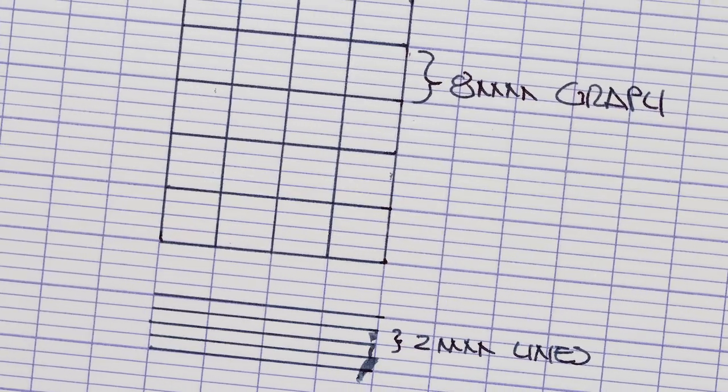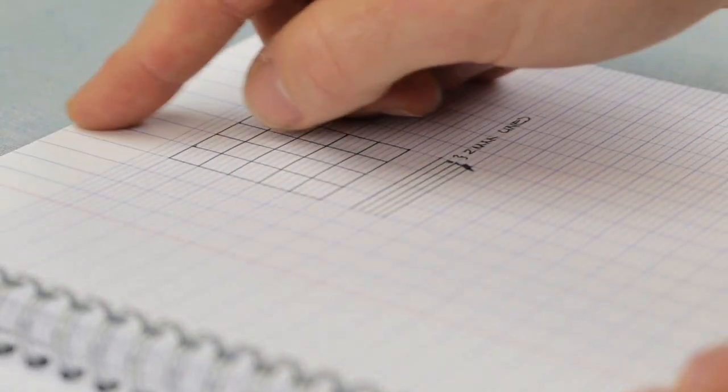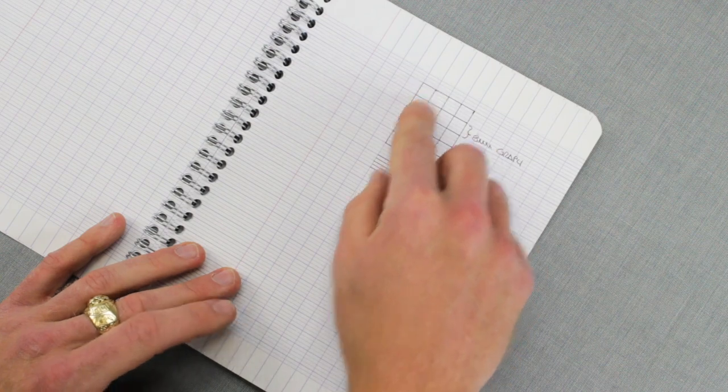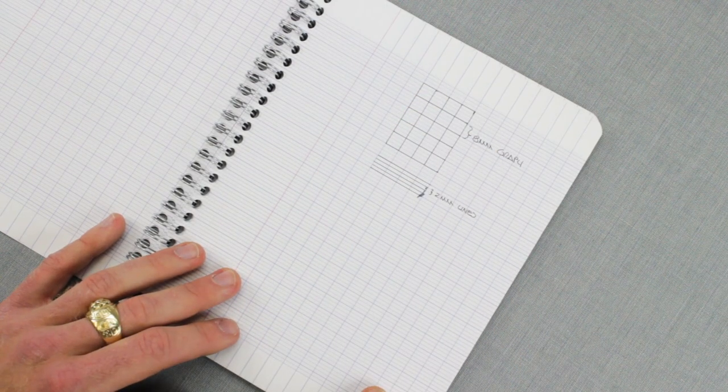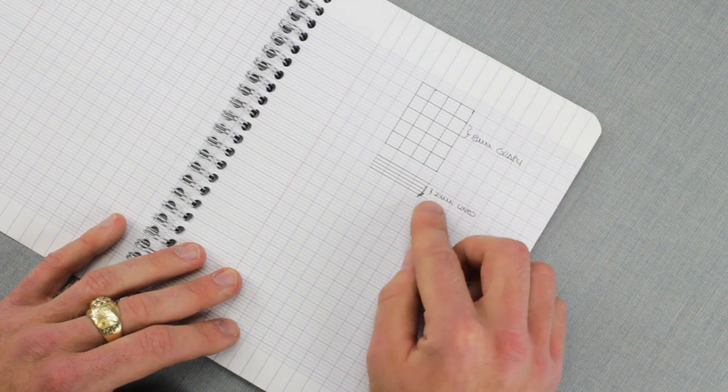The one unique thing about this ruling is it is both graph and lined. So as you can see here, the general layout is it has an eight millimeter kind of graph ruling throughout the whole page and then inside of each ruled box are two millimeter lines.